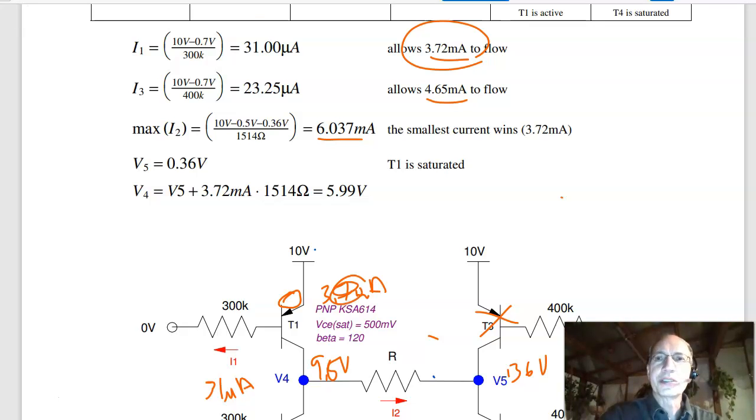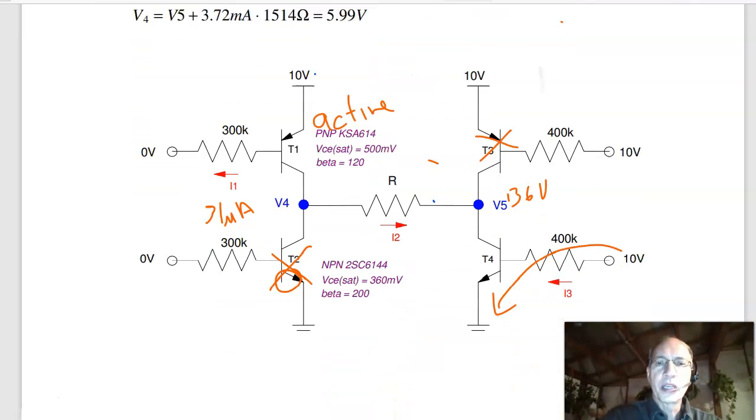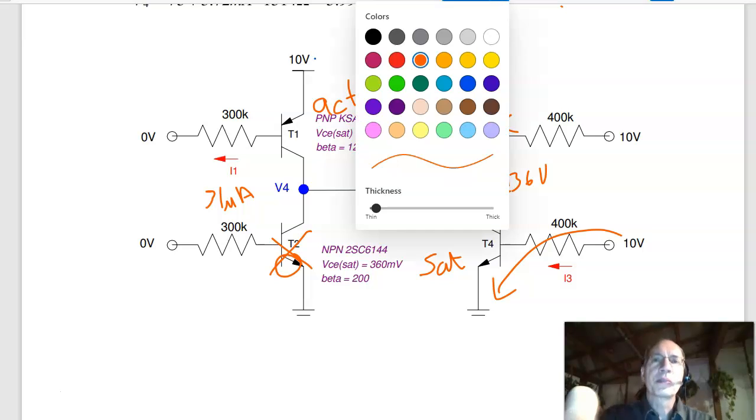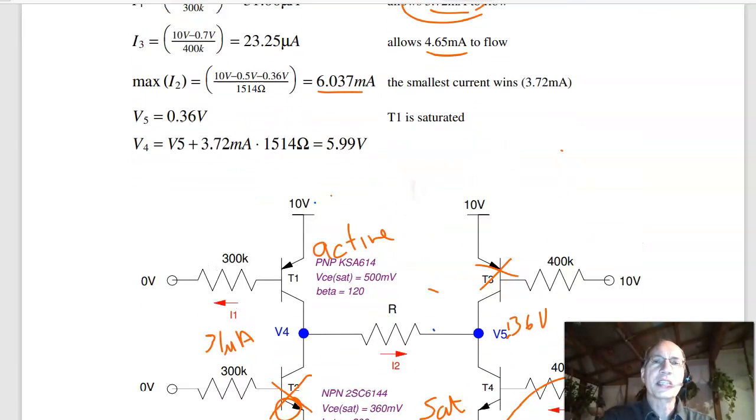What that means is that this transistor right here, T1, IC is beta IB. This one's active. T4 is saturated. When it's saturated, I know the voltage. The voltage drop across the transistor T4 is 0.36 volts when saturated. So that's V5. V4, I don't know what it is. In the active mode, V4 is somewhere between 0.5 or 0 and 9.5 volts. So I have to back into V4. I do know the current. Since T1 is active, IC is beta IB.